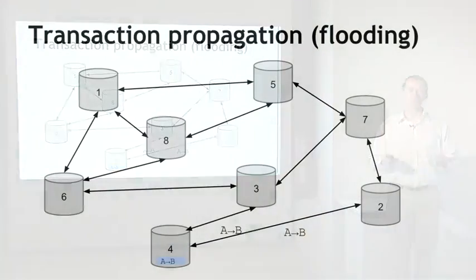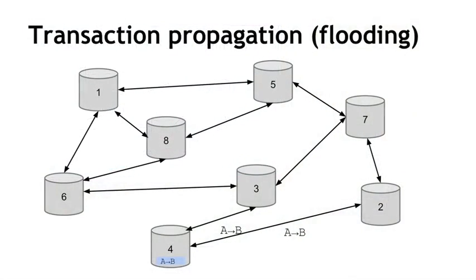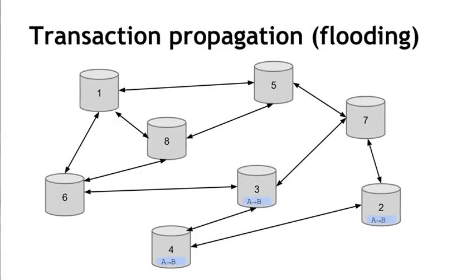Node 4 is going to talk to its neighbors, nodes 3 and 2, saying check out this new transaction — Alice wants to pay Bob. Those nodes will add it to their own pool of pending transactions. Each node maintains a list of all the transactions they've heard about that haven't been put into the blockchain yet. Then they can decide to forward it on to other nodes, and so on.